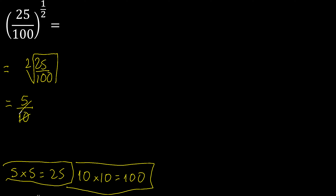Can be simplified because can be divided by the same number — divided by 5. 5 divided by 5 is 1. 10 divided by 5 is 2. Finish.